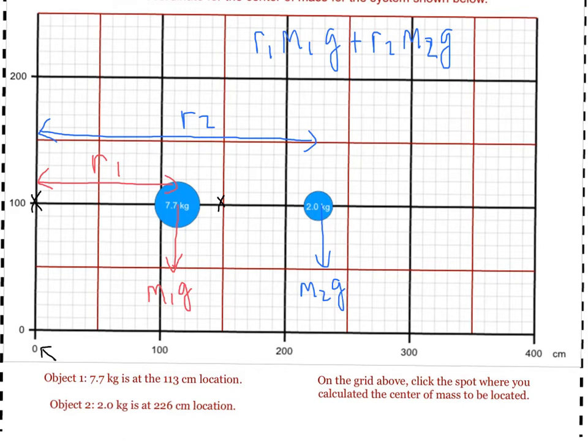Now, we imagine a single mass located at that spot that we're looking for, the center of mass, that produces the exact same torque we had originally.